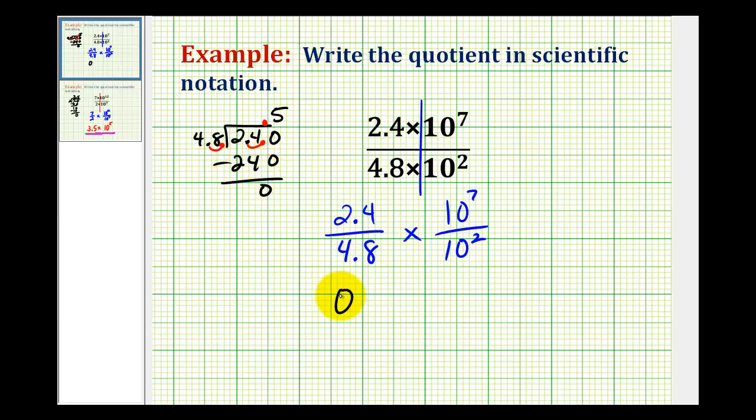So this quotient is zero point five or point five times. And then this quotient here, since we're dividing, we subtract our exponents. Seven minus two is equal to five. So this is ten to the fifth.